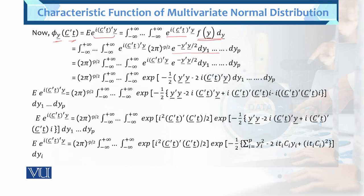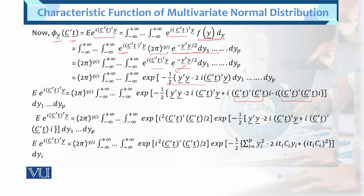Using the standard normal PDF, we simplify this term by bringing the constant outside. We go back to the variable and multiply two exponential terms together, adding them in addition form. Then we add and subtract the term iota C prime t prime C prime t — that is, add and subtract iota C prime T within the exponential.